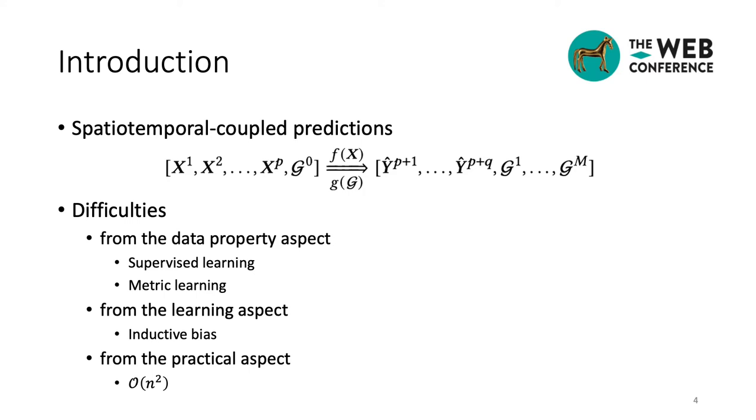However, there are three difficulties concerning spatiotemporal coupled predictions. Firstly, from the data property aspect, we consider there are only rare spatial labels, so it's impossible to learn a model in a supervised manner. Besides, since the information of time series may be limited and noisy, it's also not easy to extract effective features and learn a mapping function to measure the distance of two time series.